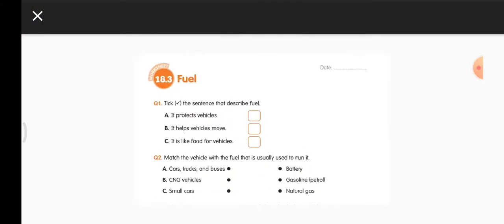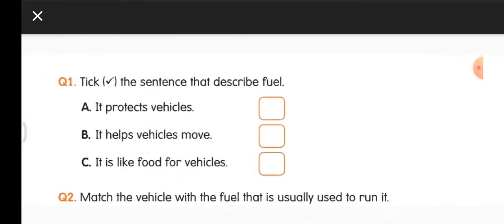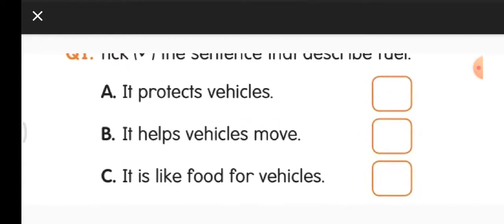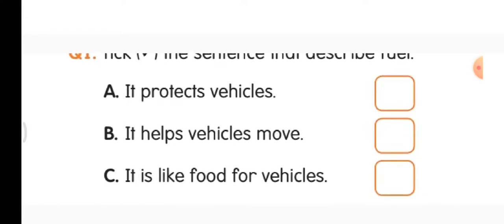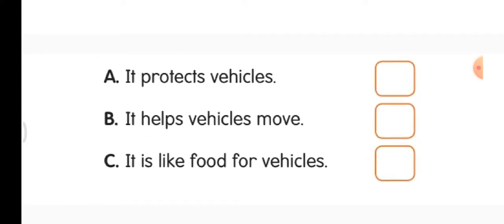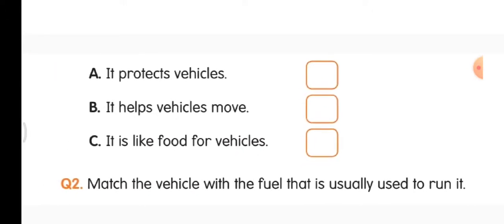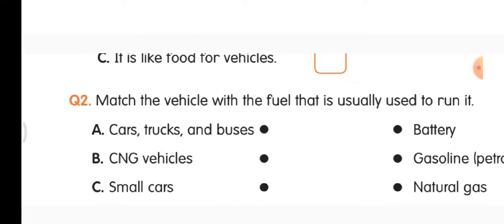Now open your worksheet and put today's date. This is lesson 18.3 Fuel. Tick the sentences that describe fuel. 'It protects vehicles' — no. 'It helps vehicles to move' — yes, tick B. 'It is like food for vehicles' — yes. So B and C are to be ticked.